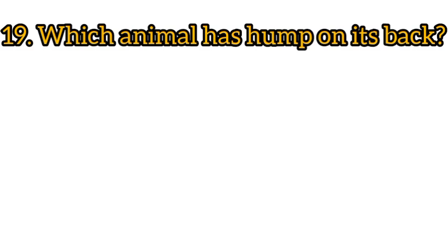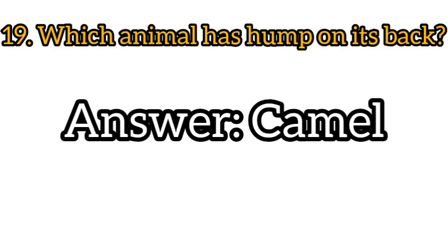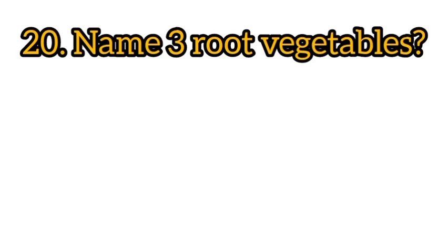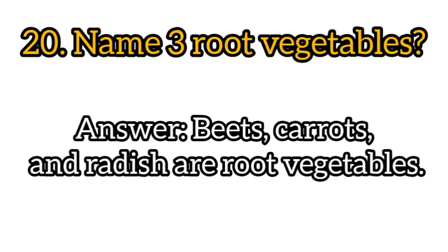Question 19: Which animal has a hump on its back? Answer: Camel. Question 20: Name three root vegetables. Answer: Beets, carrots, and radish are root vegetables.